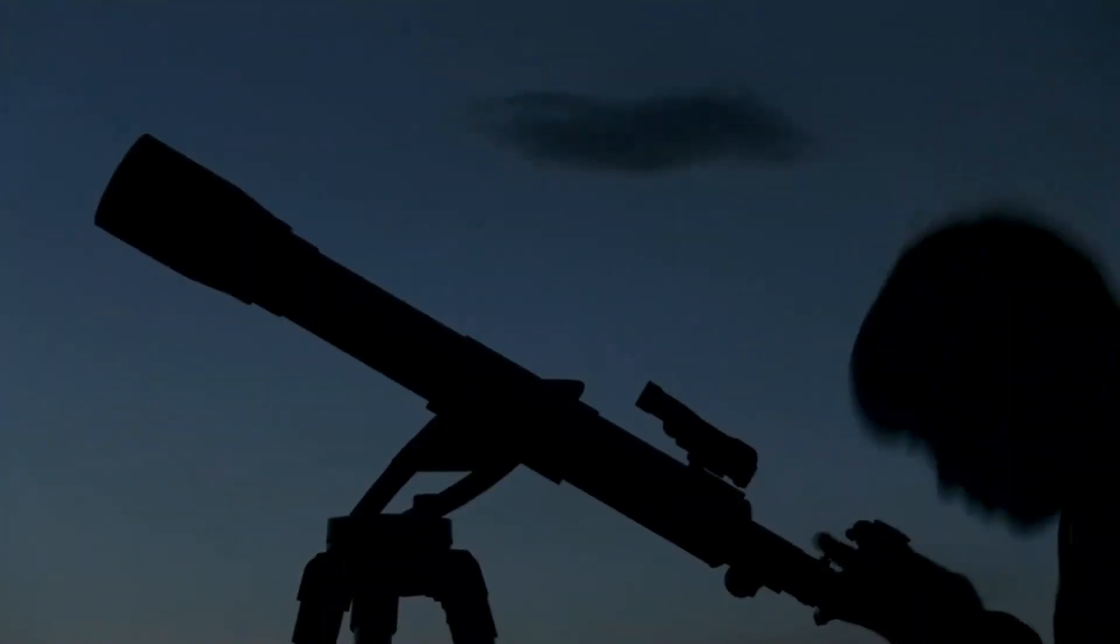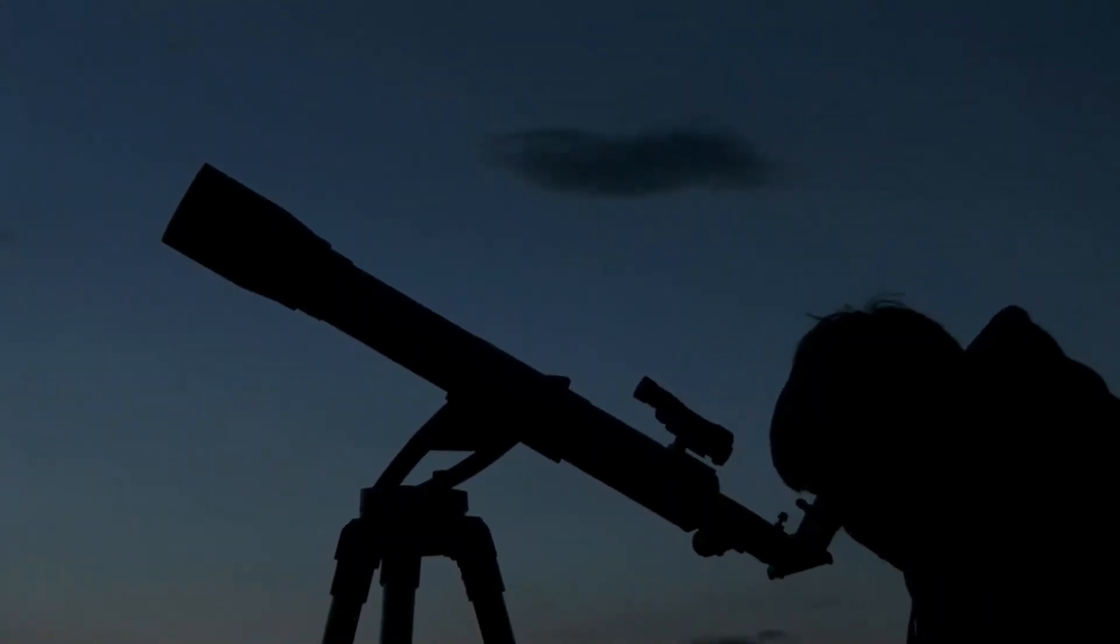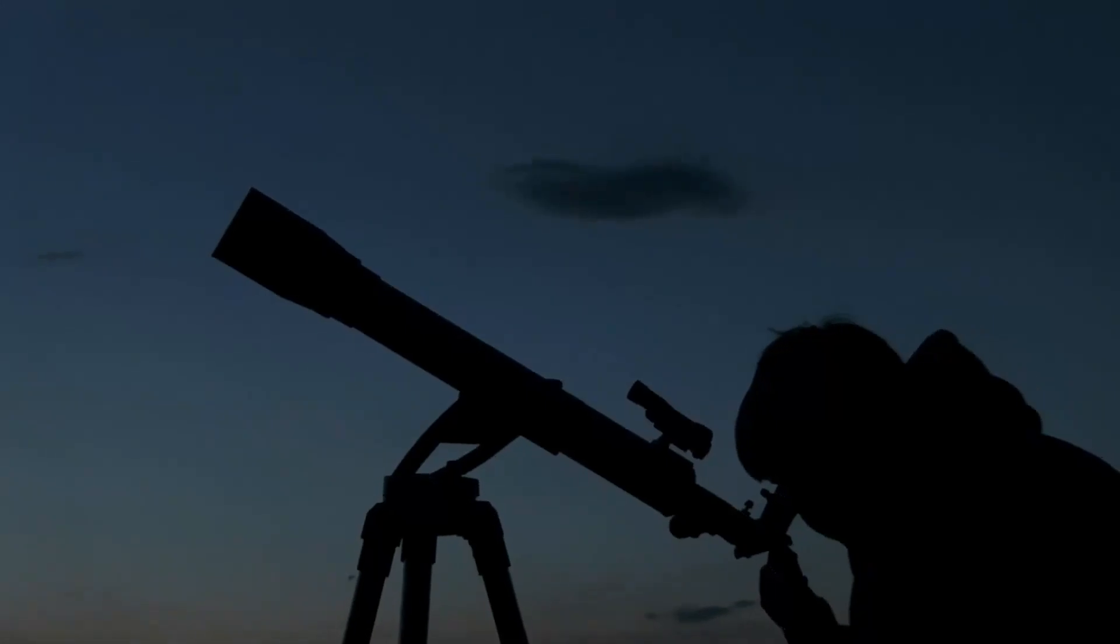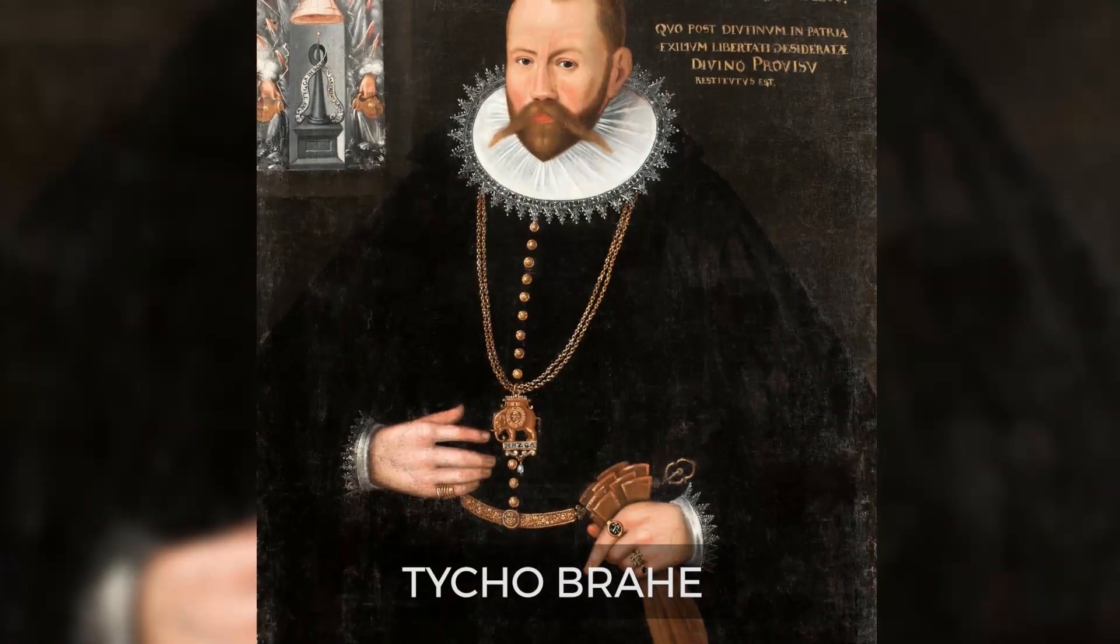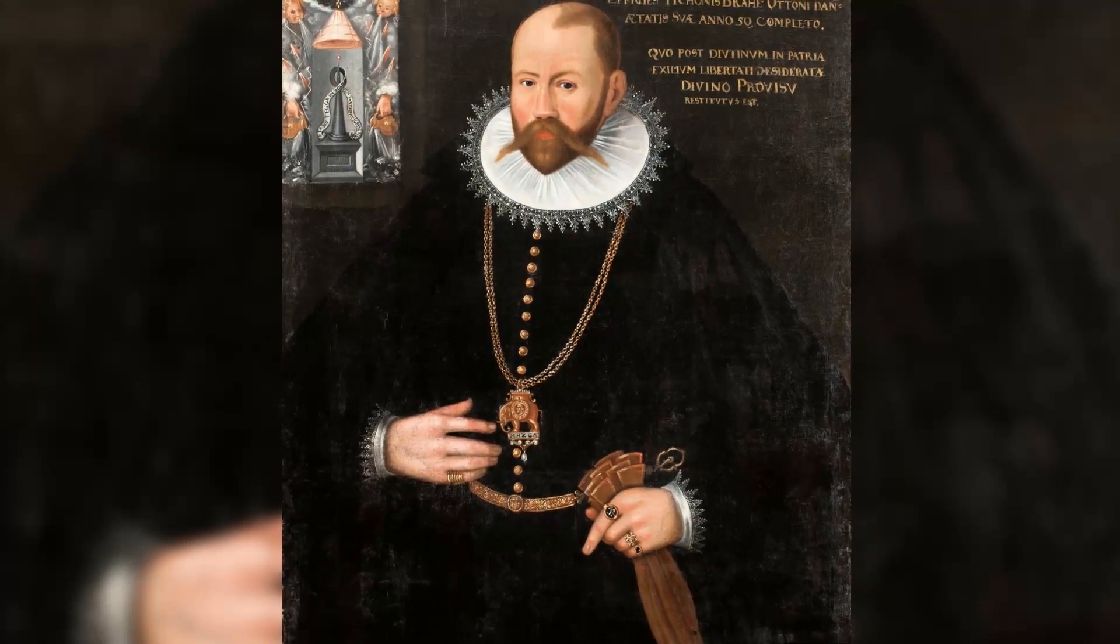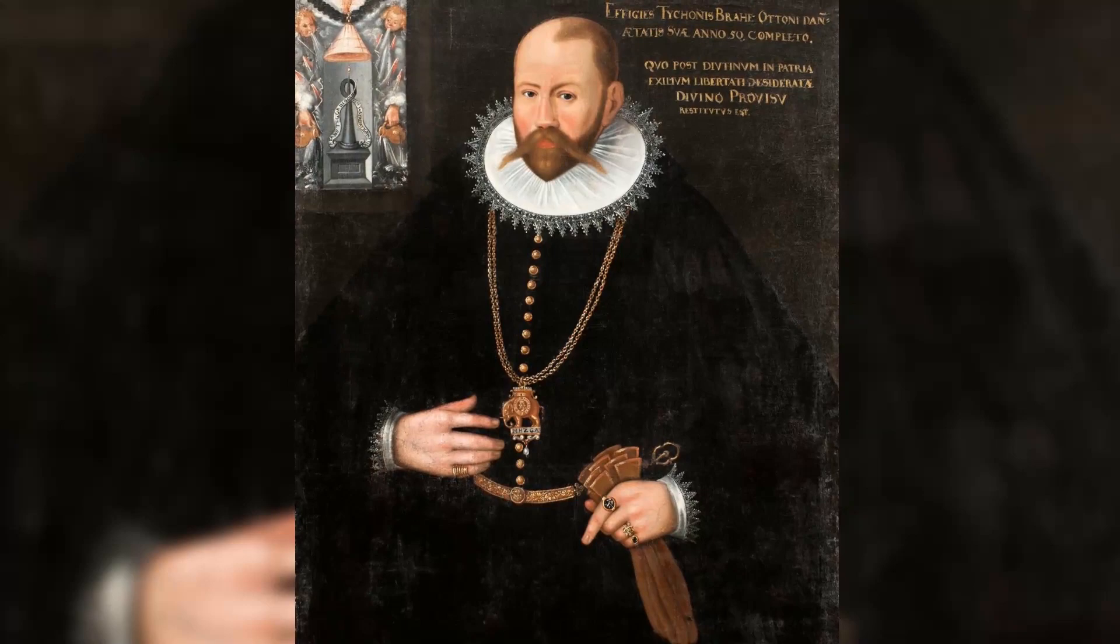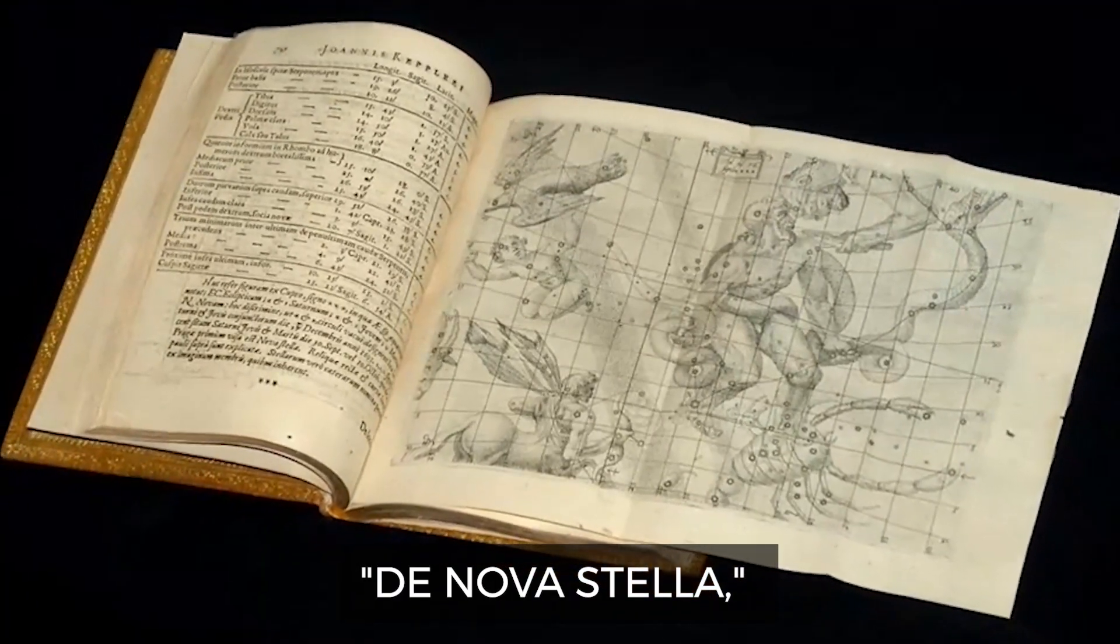Other supernovae that were observed before the telescope was invented occurred in the years 393, 1006, 1181, 1572, and 1604. Famed astronomer Tycho Brahe, who observed the 1572 event, wrote about his observations of the new star in his book, De Nova Stella, which gave rise to the name Nova.